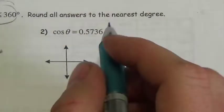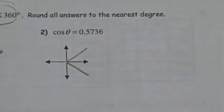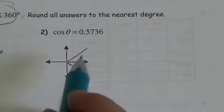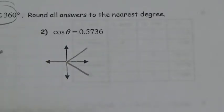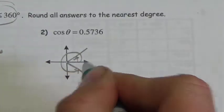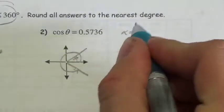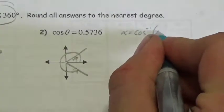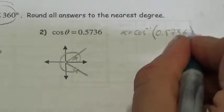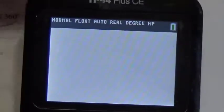Here, cosine is a positive value. We know cosine is positive in quadrant 1 and also in quadrant 4 — where the x-coordinate is positive. So I'm looking for either this angle in quadrant 1 or this one in quadrant 4. The very first thing I'm going to do is figure out what the reference angle is — the angle inside the triangle — and that will be the inverse cosine of 0.5736.